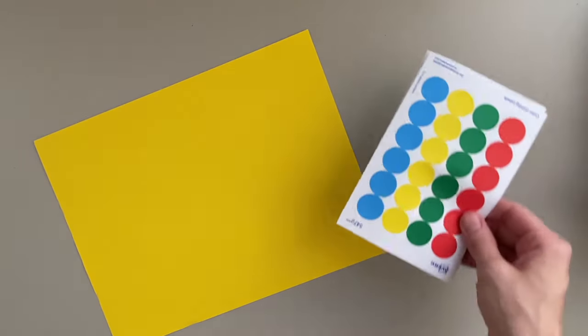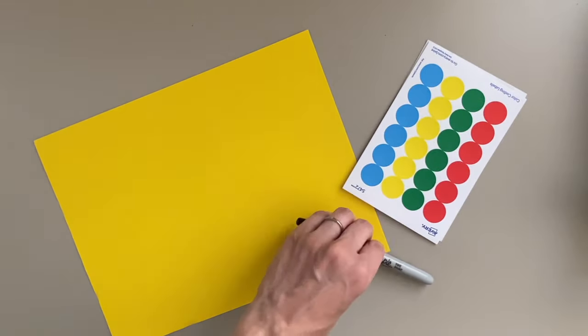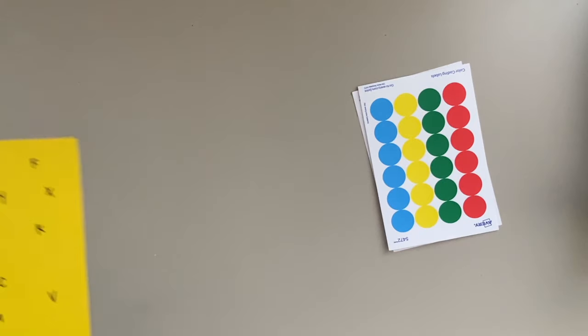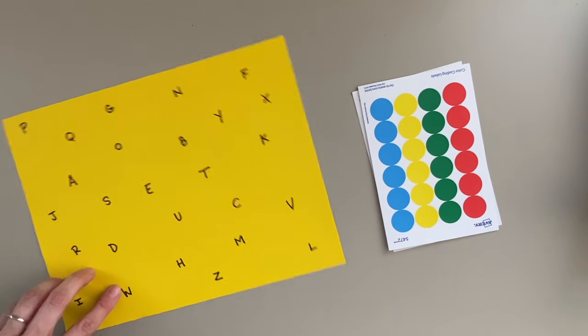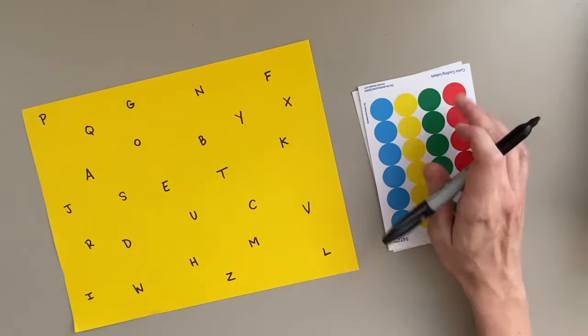First up is going to be a letter dot sticker match. You're going to need a piece of paper, dot stickers, and a pen. To set this activity up, you're going to write the entire alphabet spread out on the paper. Make sure you have the letters small enough to fit under a dot sticker. Then you're going to write the entire alphabet on the dot stickers.